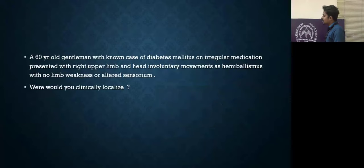So, a 60-year-old gentleman with known case of diabetes mellitus on irregular medications, presented with right upper limb with head involuntary movements as hemiballismus, with no limb weakness or altered sensorium. Where would you clinically localize?